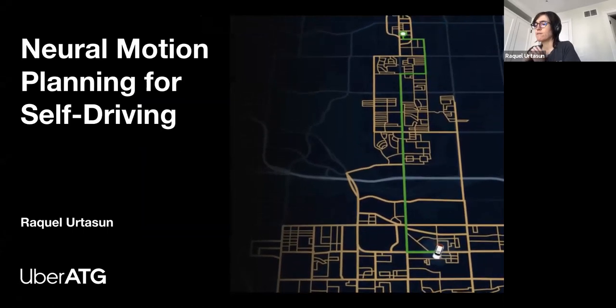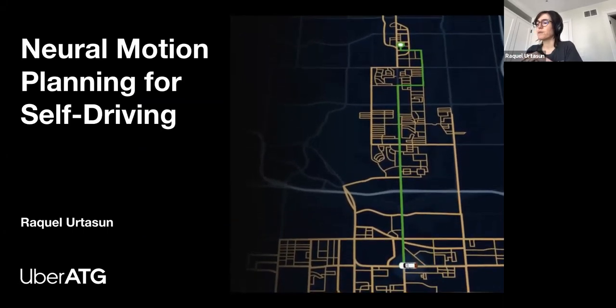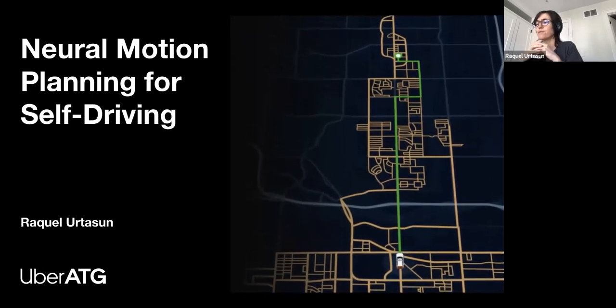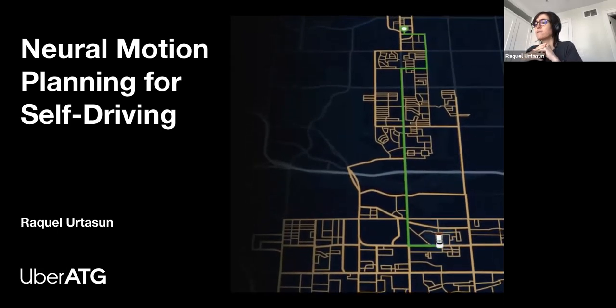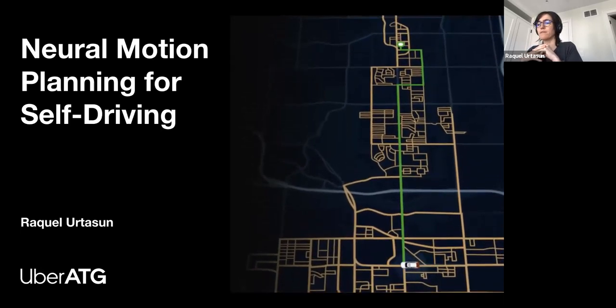Hi everyone, my name is Raquel Urtasun and I'm the Chief Scientist at Uber ATG, as well as a professor at the University of Toronto. In this talk, I'm going to reveal the latest work that we have done on interpretable neural motion planners.